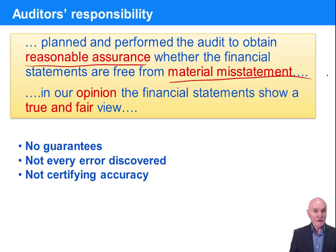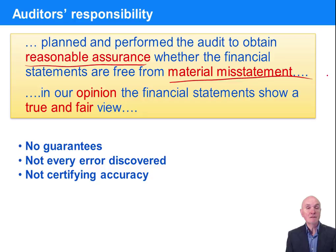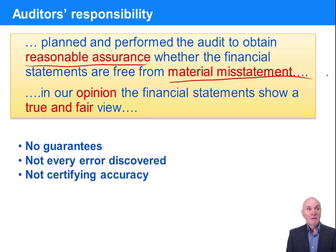Remember, there are no guarantees. Not every error is likely to be discovered. We're not certifying accuracy. The only way you could really do that is to look at all transactions 100%, and even then you may miss things — because if you're looking at thousands of transactions, can you maintain concentration? And even then, if you didn't understand some of them, you could be making errors.